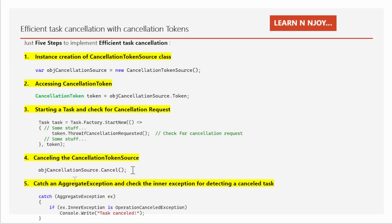That's why this statement is very important. Step number four: cancelling the CancellationTokenSource. We call objCancellationSource.Cancel(), which cancels the associated CancellationTokenSource and effectively cancels all tasks associated with the token. Step number five — the last step — we need to catch an AggregateException and check its inner exception for detecting a cancelled task. When a task is cancelled, an OperationCanceledException is thrown. Since tasks run asynchronously, these exceptions are collected in an AggregateException.